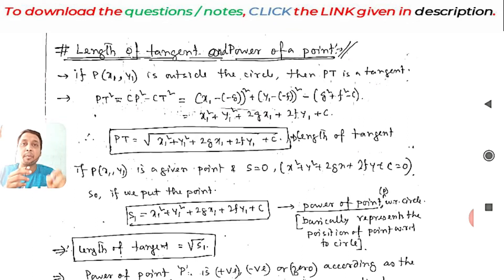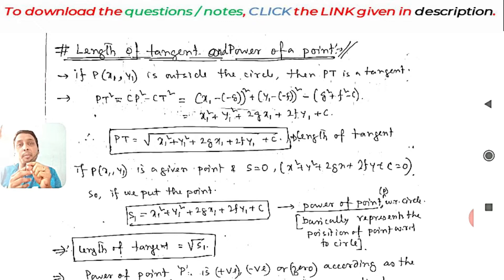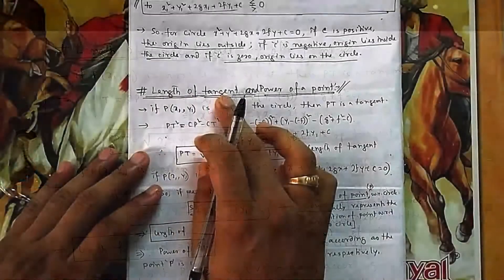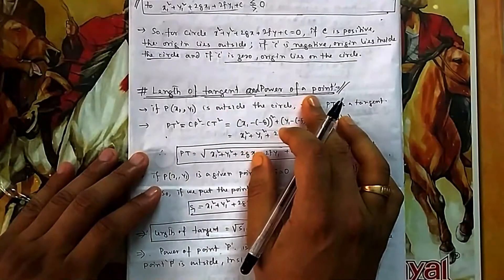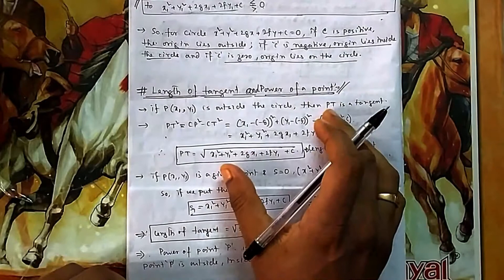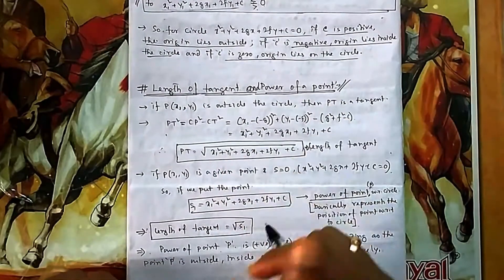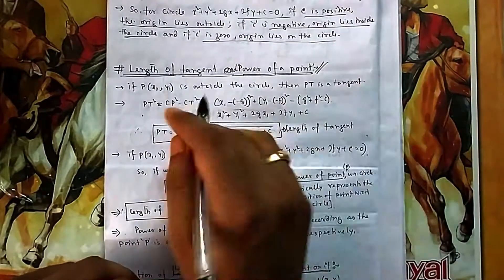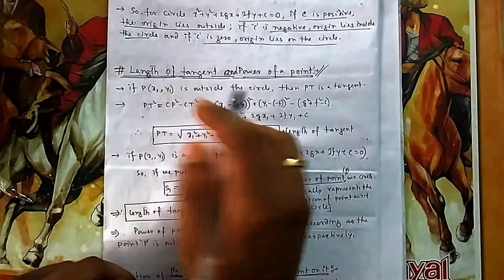Today we will see how to find the length of a tangent from an external point, and what is the concept — the meaning — of power of a point, and how it is used. How to find the length of a tangent from a given external point P.